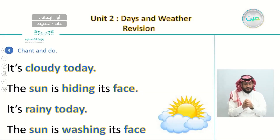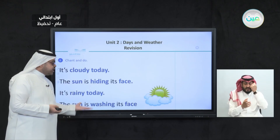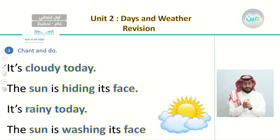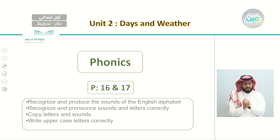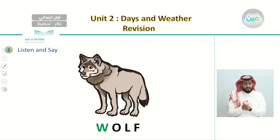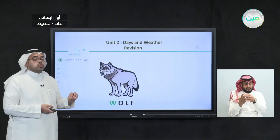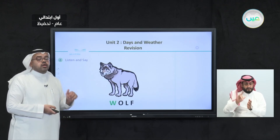We said that we can not only chant it but also act it out — acting how the sun is showing its face, hiding its face, or washing its face, to understand the weather for each action. After this, we had the Phonics lesson on pages 16 and 17, with objectives to recognize and produce sounds of the English alphabet, recognize sounds and letters correctly, and copy and write uppercase letters correctly.